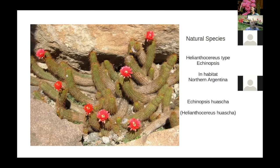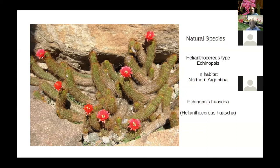This is the natural species Echinopsis eyriesii — a typical nocturnal Echinopsis plant with a fair number of offsets and a perfume to attract moths, since night-flowering plants are pollinated mostly by moths. This is a Helianthocereus-type plant in habitat in northern Argentina — Echinopsis hertrichiana, or Helianthocereus hertrichianus. As you can see, it's quite a sprawling plant, offsets fairly readily, has longish spines, and produces nice red diurnal flowers — flowering during the daytime.